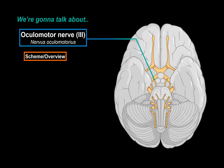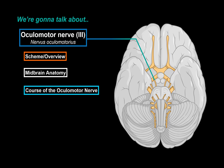We will start by making a quick scheme of the oculomotor pathway to get an overview. Then we will cover the very basics of the midbrain anatomy, because this is where the oculomotor nerve originates. After that, we'll cover the course of the oculomotor nerve and go into detail about its pathway and which structures it passes through, as well as the functions of all the muscles it innervates. At the end, we will talk about the clinical relevance around pathologies related to the third cranial nerve pathway.